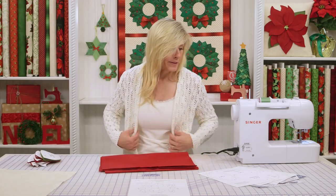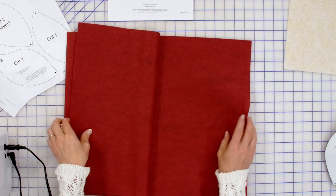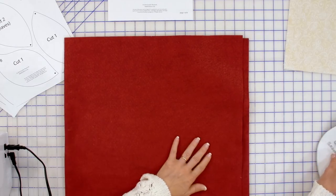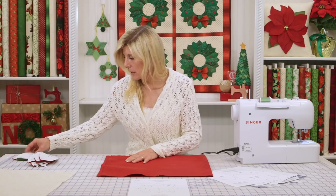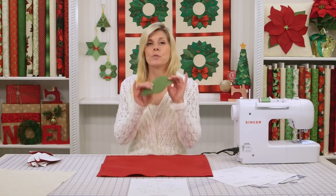Now once you've got your pattern shapes cut out, you'll grab your wool felt, and I'll just grab the red because I have it handy today. And it looks like piece A. Piece A, you cut two of those. That's your green.